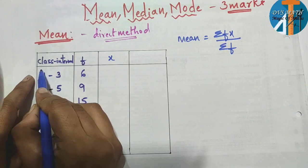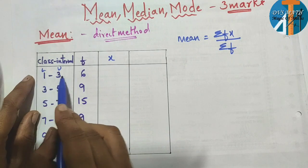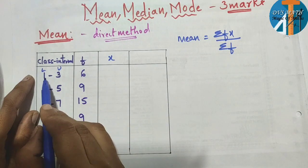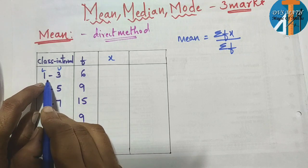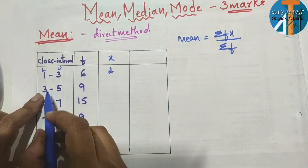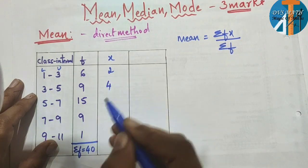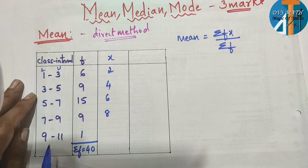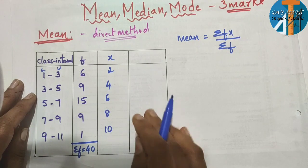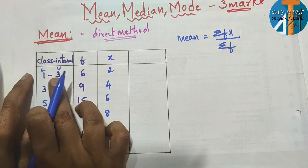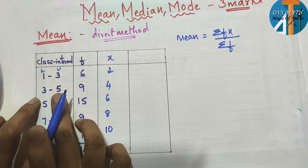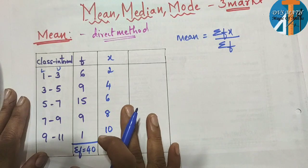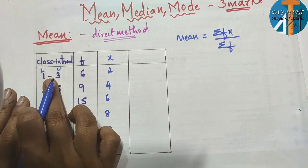The lower limit plus upper limit divided by 2 gives the x value. So: 1+3=4, 4/2=2. Between 3 and 5 is 4; between 5 and 7 is 6; between 7 and 9 is 8; between 9 and 11 is 10. You can also add upper and lower limits and take half: 5+7=12, 12/2=6. For simple intervals like these, you can directly find the number in between.